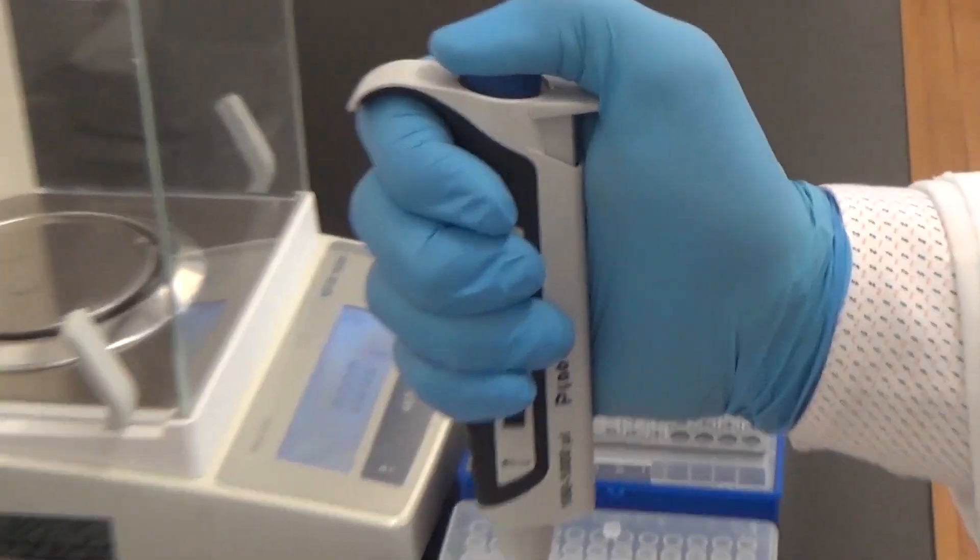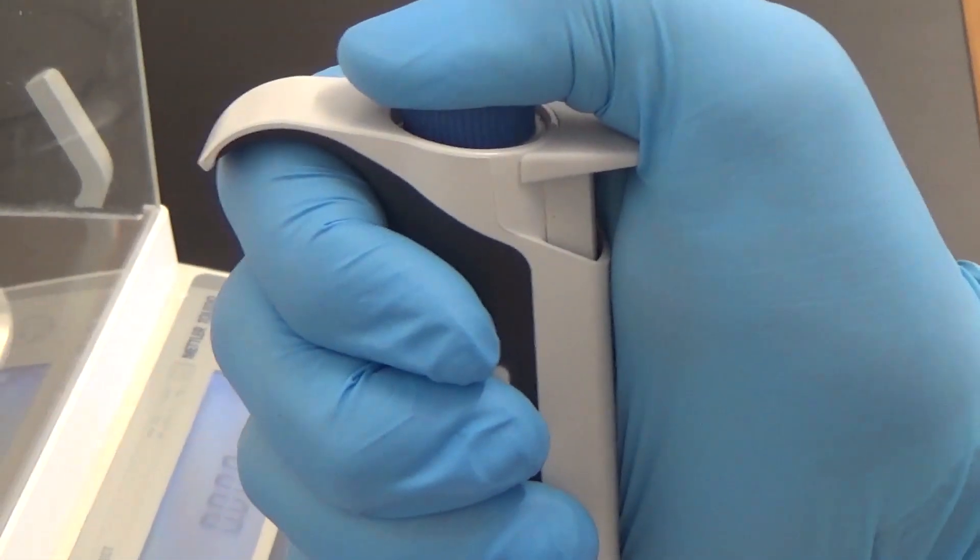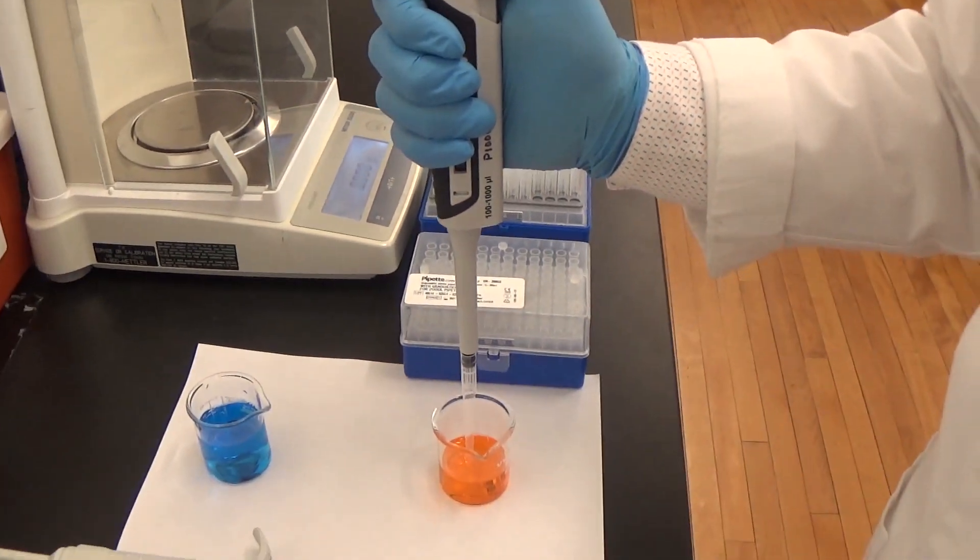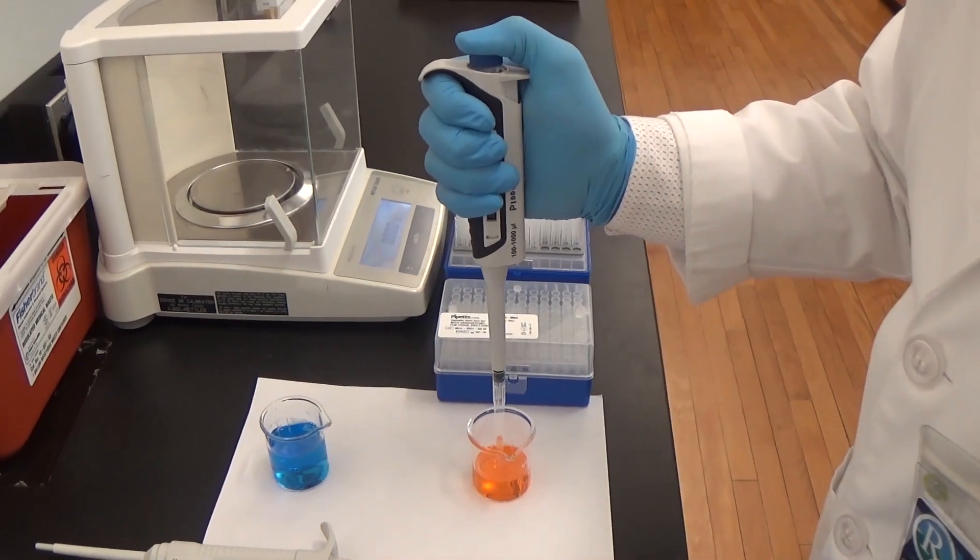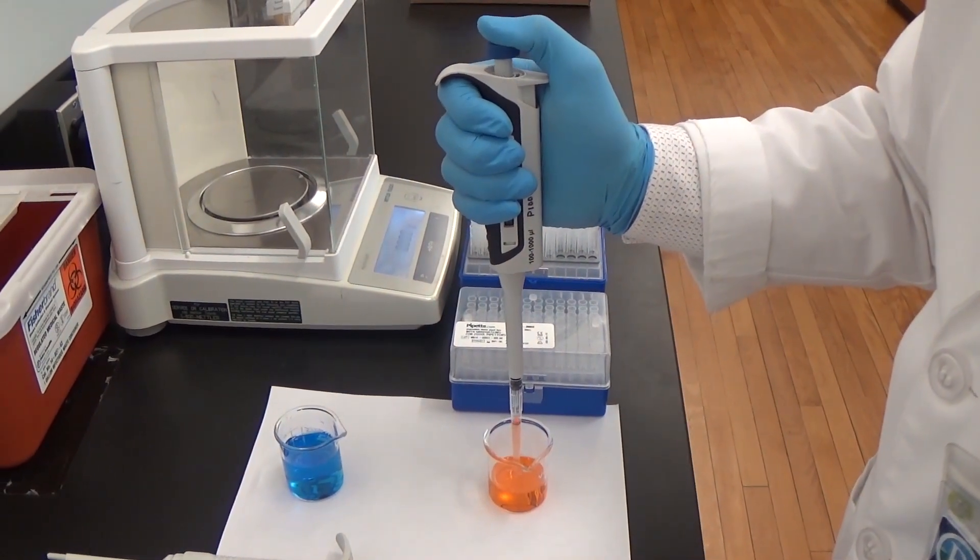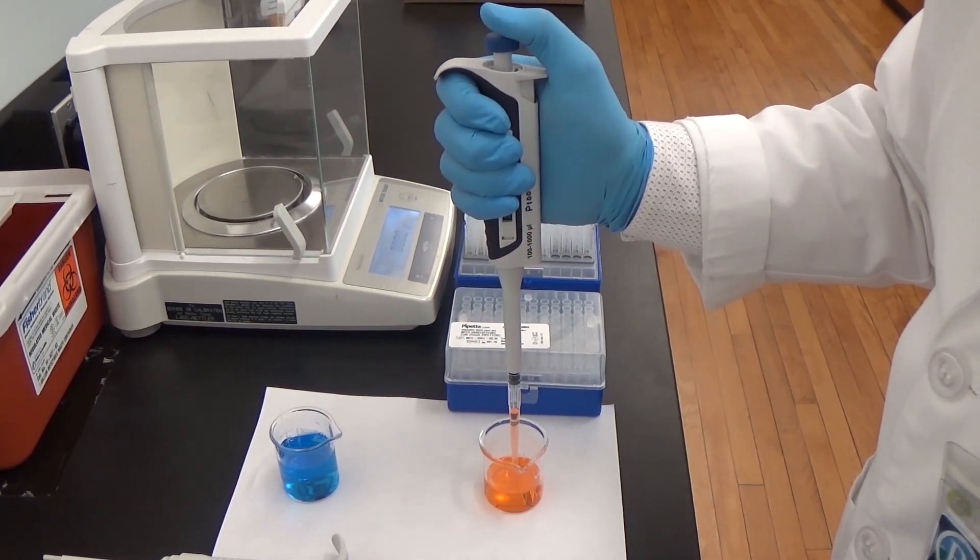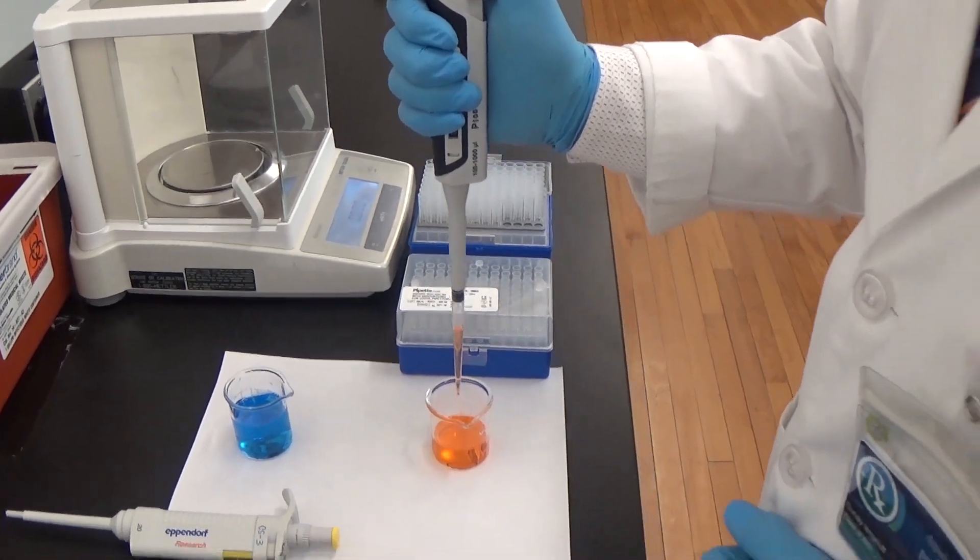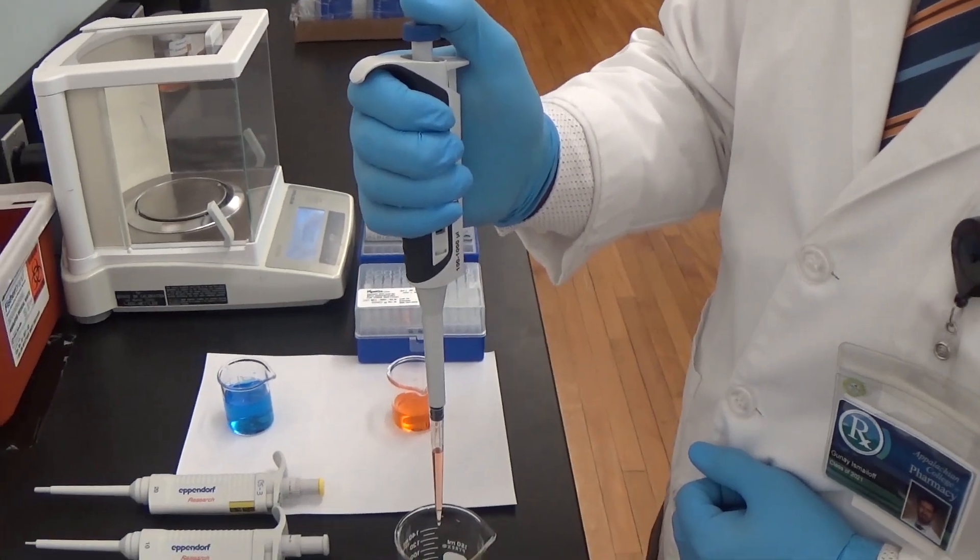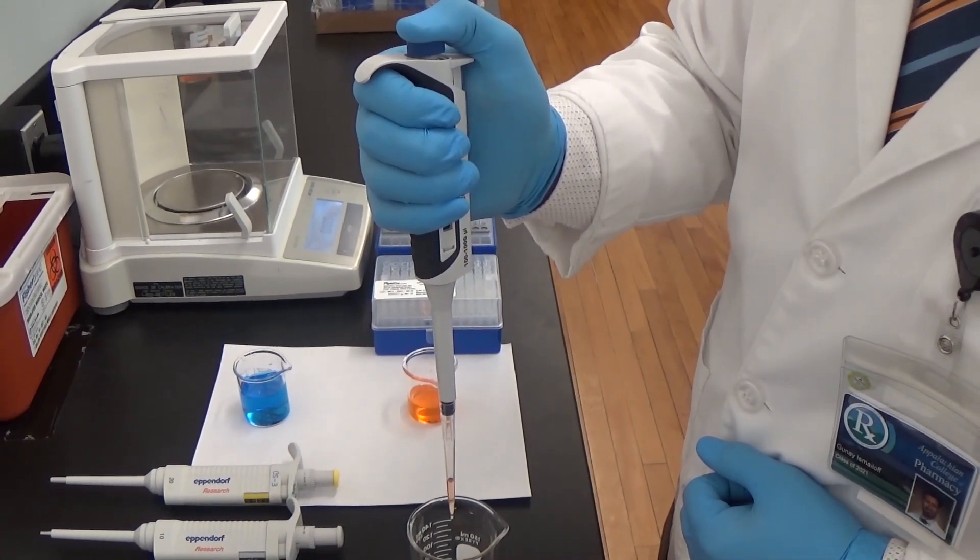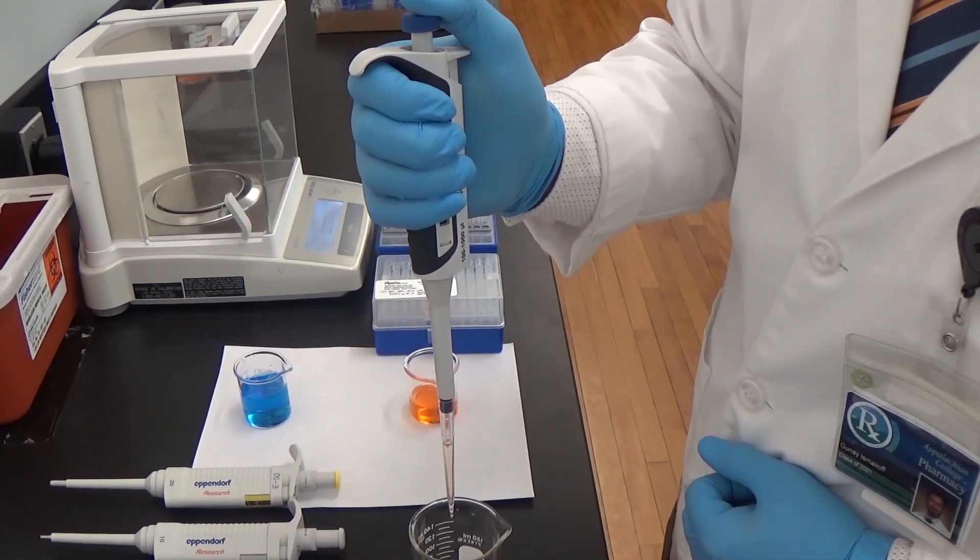In the case of using reverse pipetting method, to draw liquid you must depress the plunger to the second stop because the liquid is very viscous. Dispense the liquid by gently pressing the plunger to the first stop. This volume is equal to the set volume.